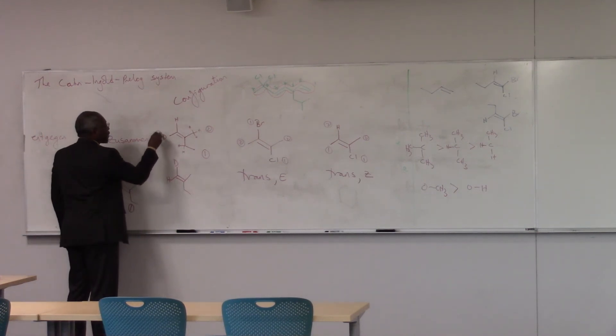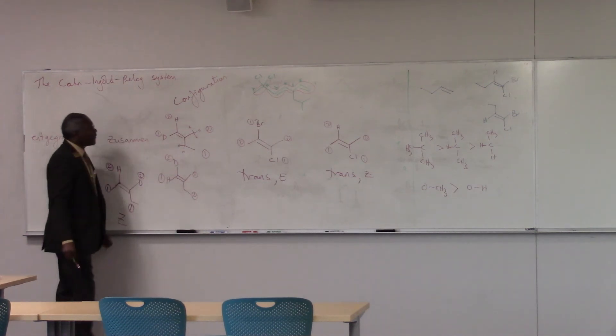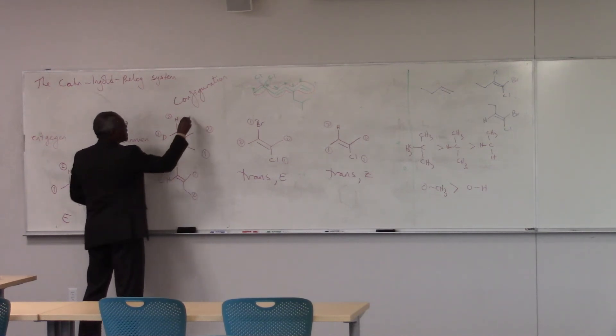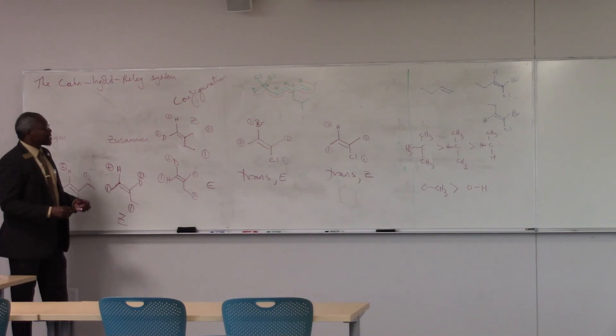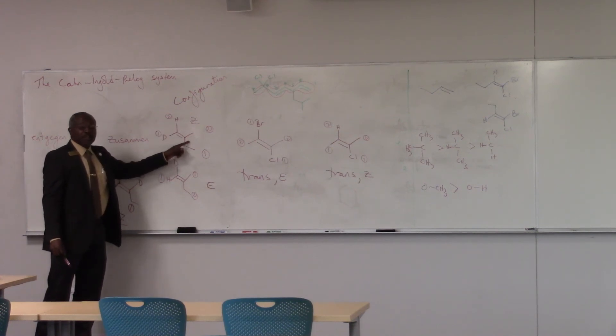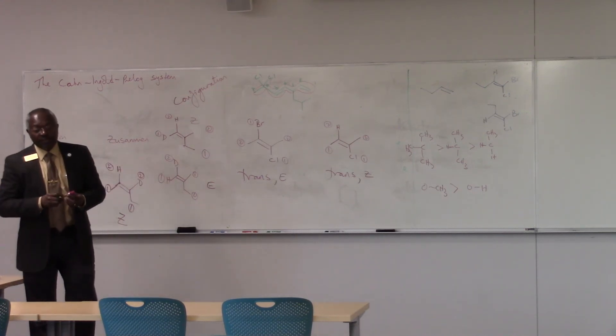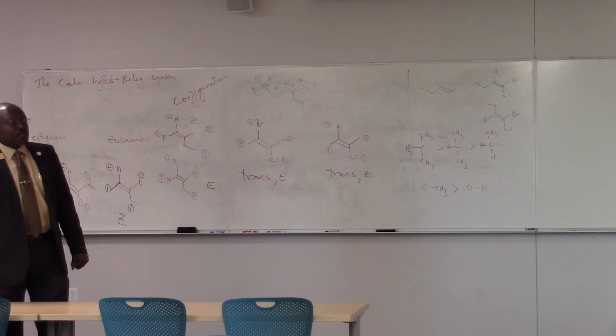So this is priority 1 because this has an atomic mass of 2. This is priority 2. That's atomic mass of 1. So this is 2, 1. And this is 1, 2. So this compound would be the Z isomer. This compound would be the E isomer. And if you look at them, the labels cis and trans don't apply to those compounds. Because the H on this carbon is not matched by H here. Neither is the D or the methyl or the ethyl. So there are times when cis and trans will not work, even though there's geometric isomerism.